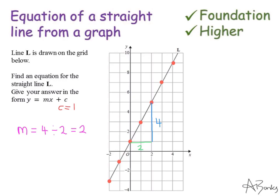Now I've got the two important things I need to know. I've got my gradient and I've got my y-intercept so I can now form the equation of my line. It's y equals, m is 2, x and c is plus 1. So that is the equation of this straight line.